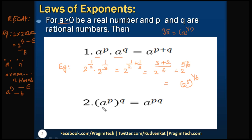The second law: whenever there are two powers for a given number — that is (a to the power of p) to the power of q — we can multiply the two powers. So (a^p)^q equals a to the power of p × q.